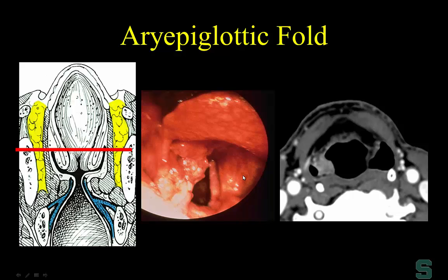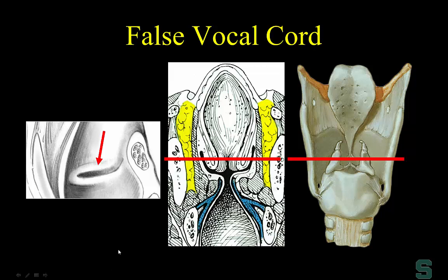On CT, there's the epiglottis anteriorly — midline. Here's the normal aryepiglottic fold on the left. On the contralateral side, the aryepiglottic fold contains a mass — the carcinoma. Notice what it does to the piriform sinus: it's actually pinching it off. This is important for vocal cord palsies — in vocal cord palsy, the ipsilateral piriform sinus will be dilated. The false vocal cord is conceptually the toughest structure for me.